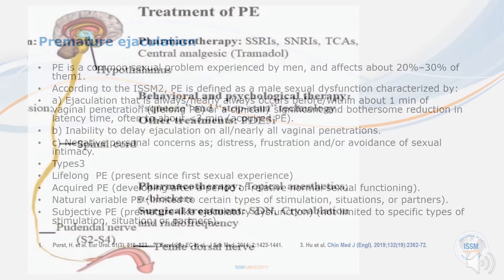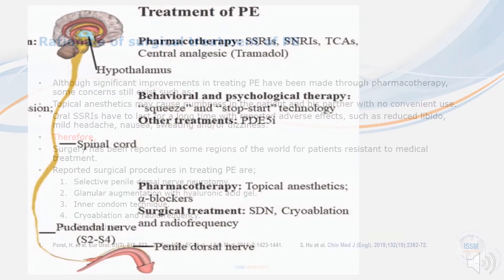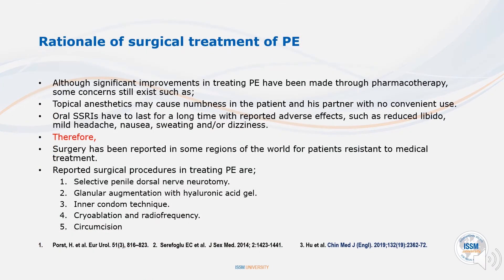According to the ISSM, there are several types of treatment for PE that target certain levels. At the central level, we have pharmacotherapy. Although substantial improvements in treating PE have been made through pharmacotherapy, limitations still exist.